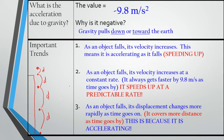Another important thing to know is that this applies to all objects. All objects are going to experience an acceleration of negative 9.8 meters per second squared. It doesn't matter if it's a bowling ball or a piece of paper — assuming there is no air resistance, this is the acceleration that the object will feel when it is in the air.